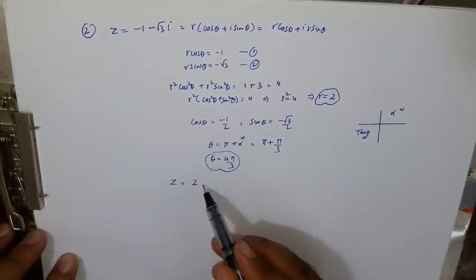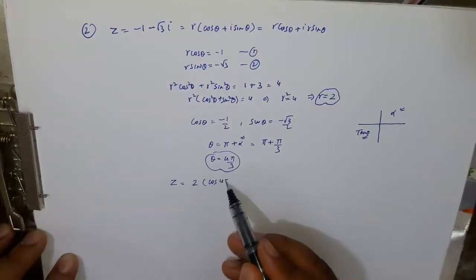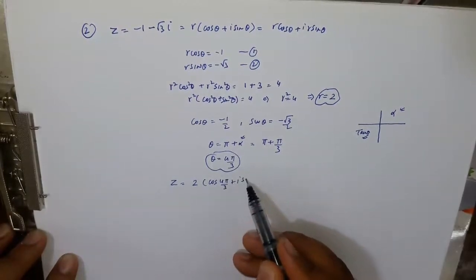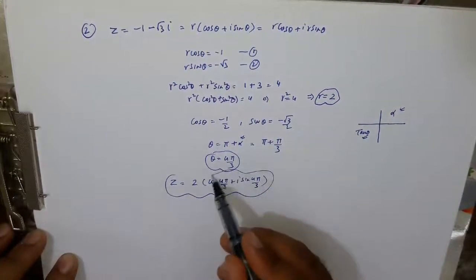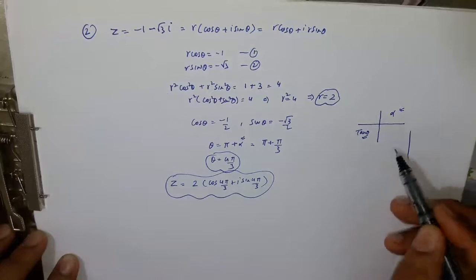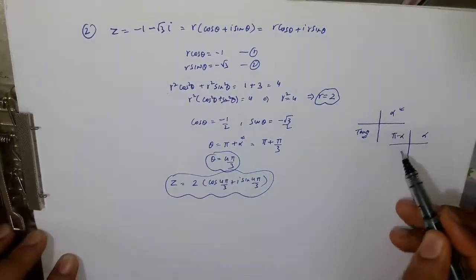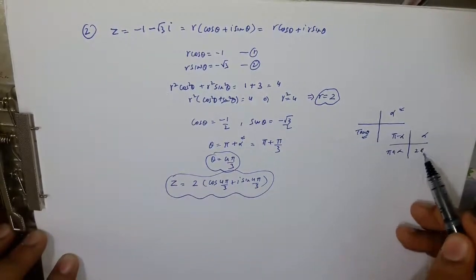Which means the point lies in third quadrant and the principal value here is alpha or pi minus alpha or pi plus alpha or two pi minus alpha.